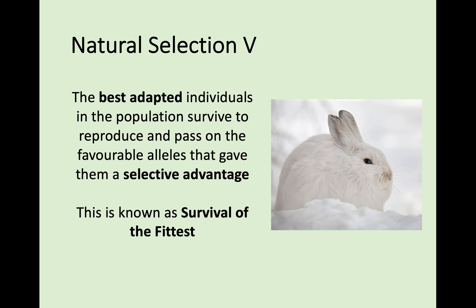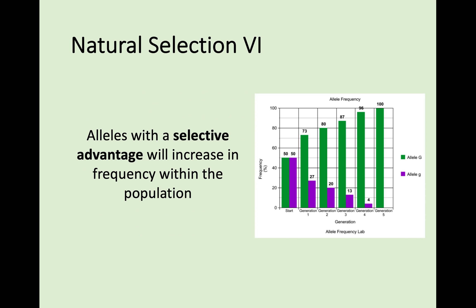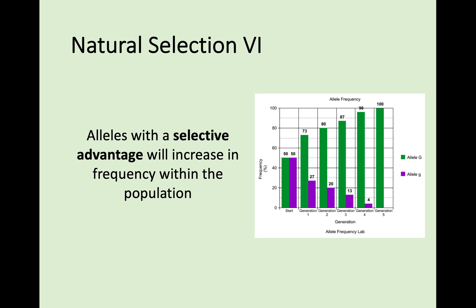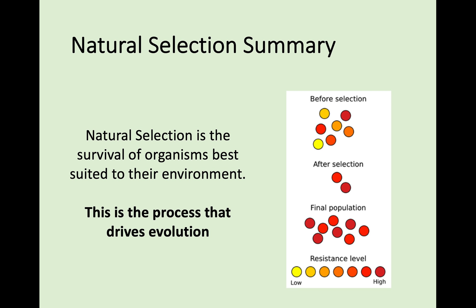For example, a brilliantly camouflaged white rabbit in a snowy area will pass on the genes for a white-coloured fur coat, leading to a change in that population. These alleles with advantageous traits will increase in frequency over time. If white colour was rare at the start, after snow cover comes in and white rabbits have a selective advantage, white-coloured coats will become far more frequent. Natural selection is simply the survival of organisms best suited to their environment, and this is the process that drives evolution.